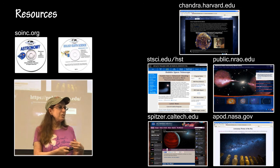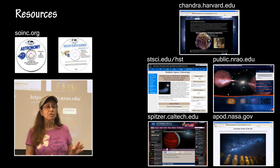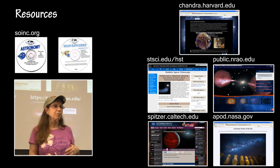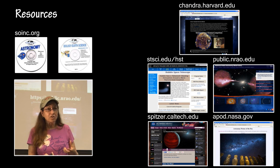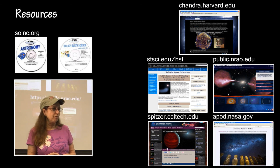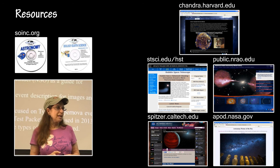Stick to these websites: Chandra, Hubble, and APOD — which is a great place to start by searching a deep sky object to see every important scientific press release image in different wavelengths. Spitzer and radio resources are also great.